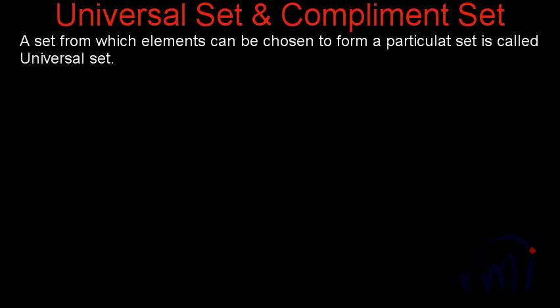In this video we are going to talk about universal set and complement set or complementary set. So first we are going to talk about universal set. A set from which elements can be chosen to form a particular set is called a universal set.